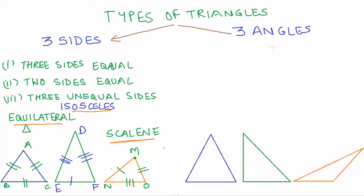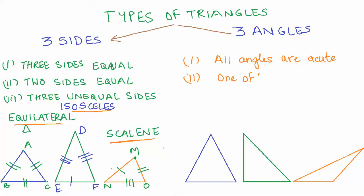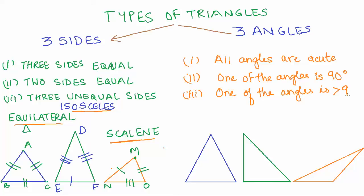Now we can have a similar classification based on angles, and you have to be a bit careful about what type of angles we are looking at. In the first case, all angles are acute — that is, less than 90 degrees. In the second case, one of the angles is 90 degrees or a right angle. And the third possibility is that one of the angles is greater than 90 degrees, or an obtuse angle.